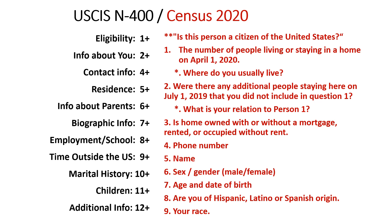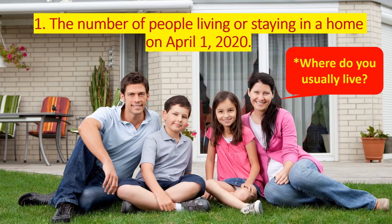There are two versions of the census. The census done by person number one, who is the head of the household — the person who is legally obligated to pay the taxes or the rent — versus the people who come and live with that person. They're going to be asked different sets of questions. The first question asks for the number of people living or staying in the home on April 1st, 2020, simply counting how many people are at your residence.